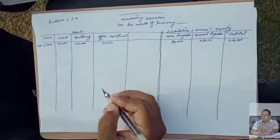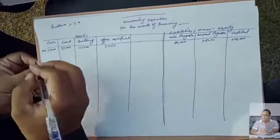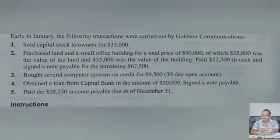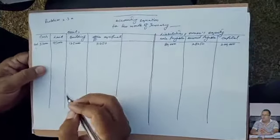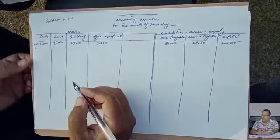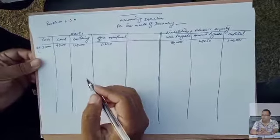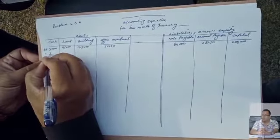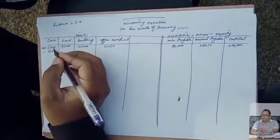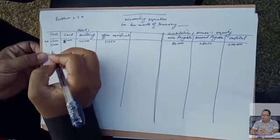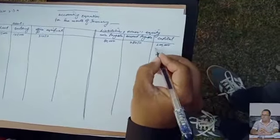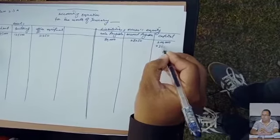The first transaction is: Sold capital stock to owners for $35,000. You have sold capital stock — basically the company sold it for $35,000. So cash will be added because when we sell, the money comes in. Cash is added, and in addition, the capital stock will also be added by $35,000.